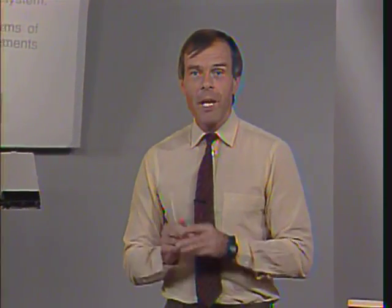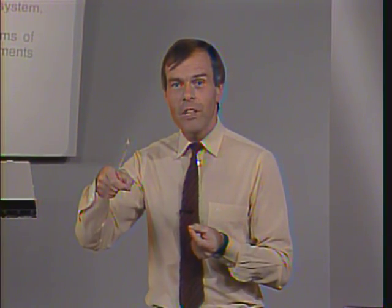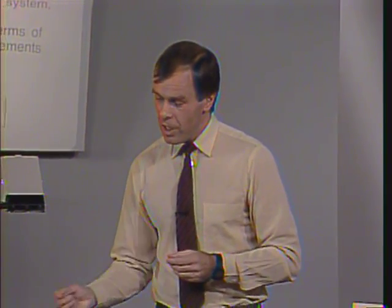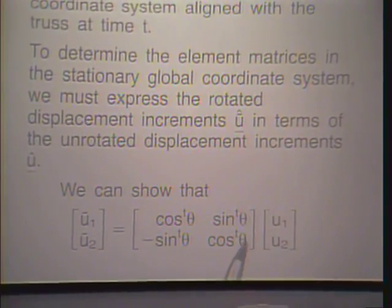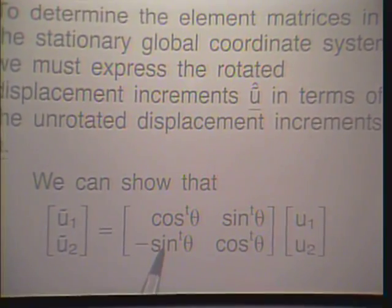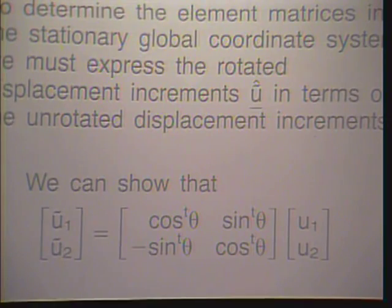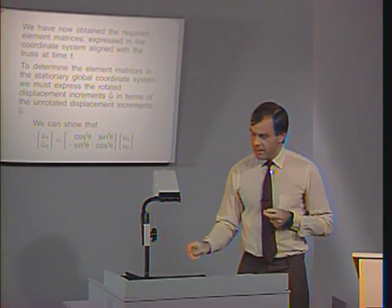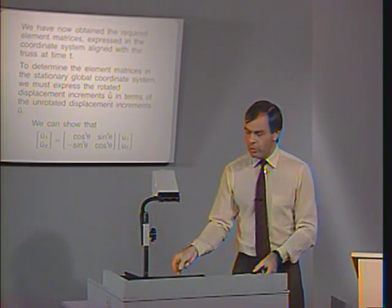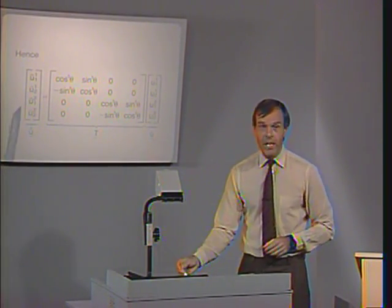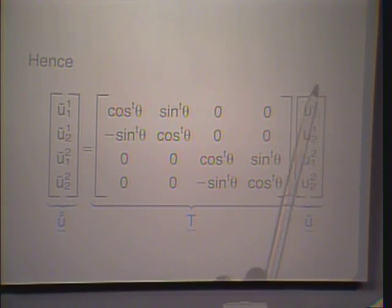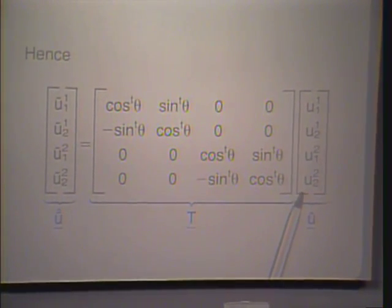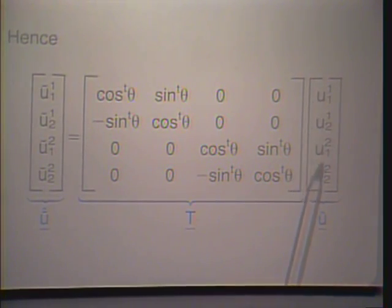We have used a curled coordinate system and must transform to the stationary global coordinate system. The curled displacements are related to the uncurled displacements by a transformation matrix — this transformation is well known from linear analysis and simply transforms displacements from one coordinate system to another. This holds anywhere along the element for continuous displacements and also at the nodes. Applying it at the nodes, the curled nodal displacements are given in terms of a transformation matrix times the uncurled nodal displacements.